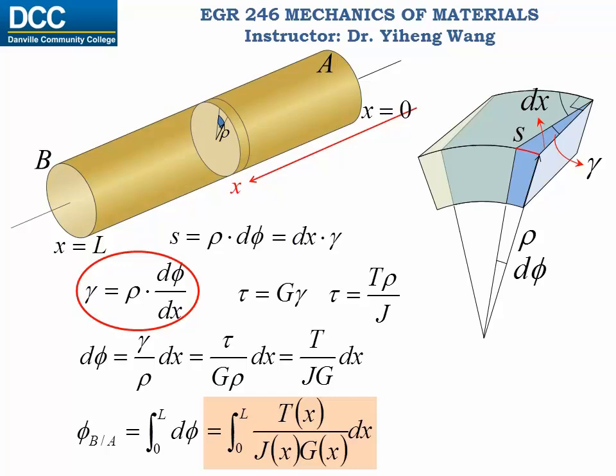This equals the integration of T over JG dx. Here, T is the internal torsional moment, which is a function of position. J, the polar moment of inertia, and G, the modulus of rigidity, could also be functions of location, since sometimes there could be a cross-sectional change in the shaft, or the shaft could be a composite shaft made of several different materials with different G values.